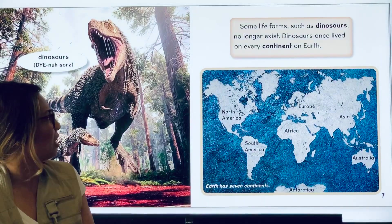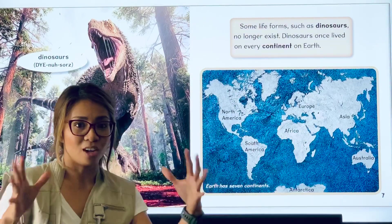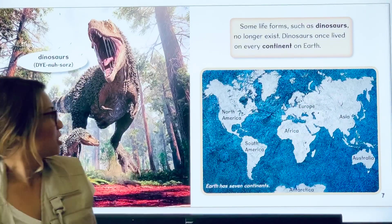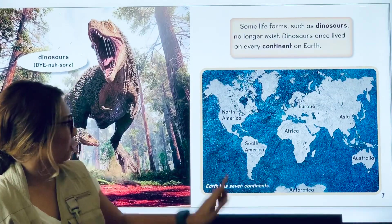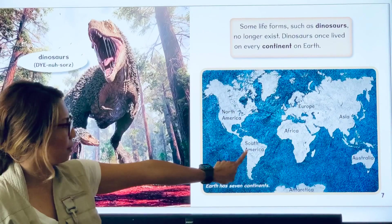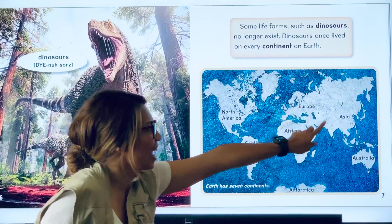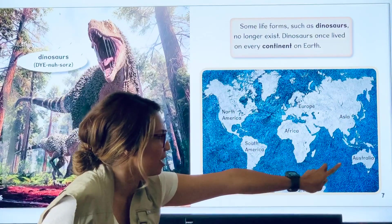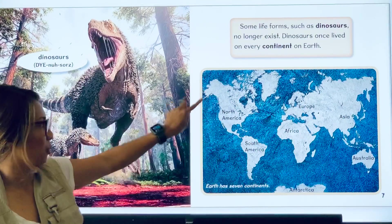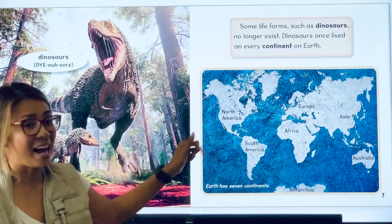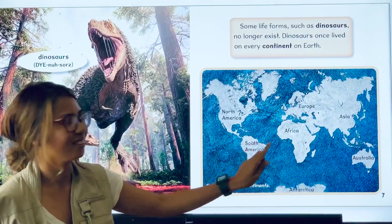Dinosaurs once lived on every continent on Earth. Continents are large land masses on Earth. Earth has seven continents: North America, South America, Africa, Europe, Asia, Australia, and Antarctica. Today we live in North America. Back then, dinosaurs lived on every single continent. That must be a lot of dinosaurs.